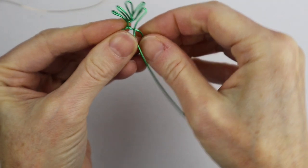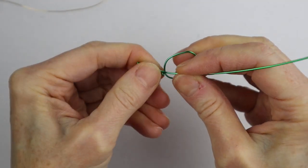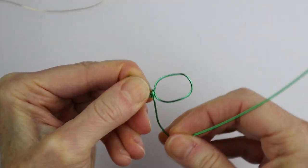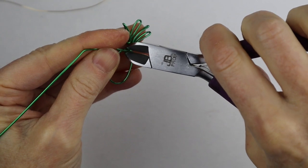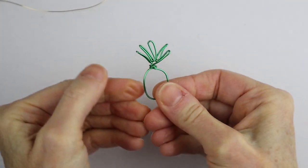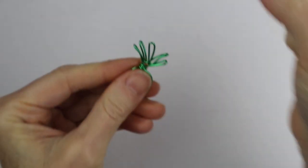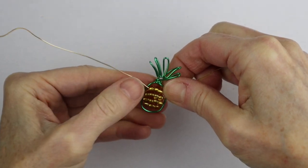There we have our leaves. You need to finish it off, so just take this and wind it around a couple of times at the base there. We have our basic shape for the pineapple. What you want to do now is attach these little yellow beads - they're super cute, I really like these amber color ones.